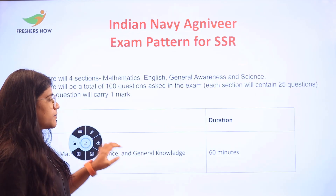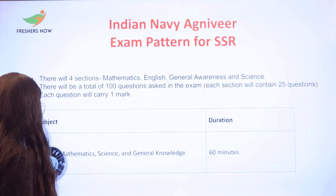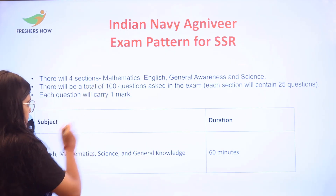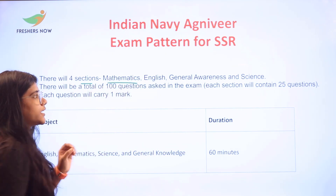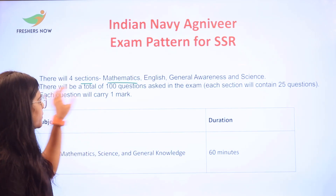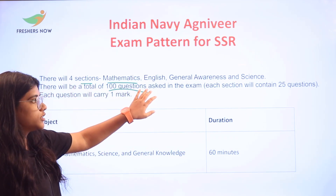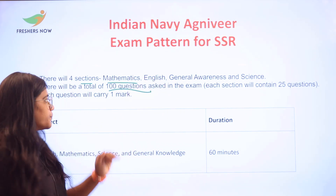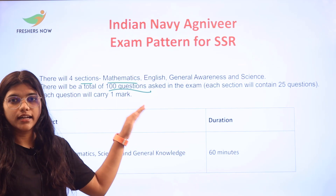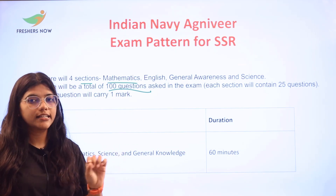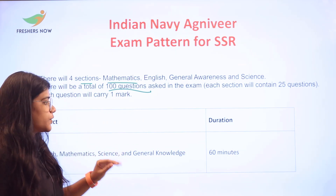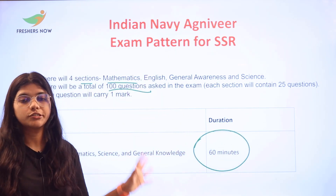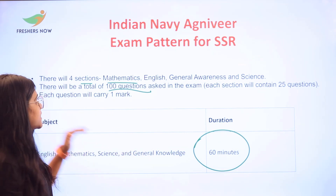For the written test, there are four different sections: Mathematics, English, General Awareness and Science. In the whole examination, each section has 25 questions, and every correct answer carries 1 mark. The total time duration of the examination is 60 minutes.